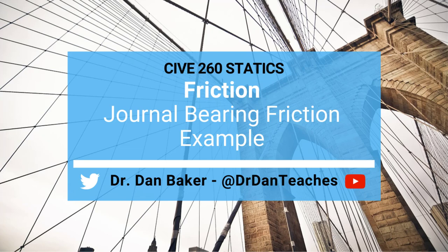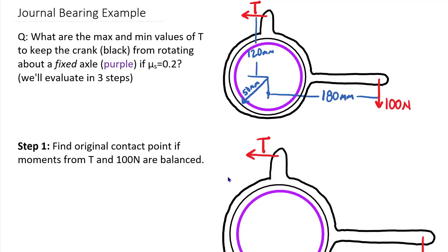Hey students of statics, this is Dr. Dan Baker and in this video we are going to take a look at a journal bearing example. I walked through a hypothetical example in the introductory video where we had a fixed housing and a movable bearing. In this one we're going to flip this around and look at a fixed axle.